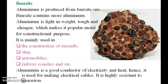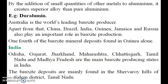Bauxite: aluminium is produced from bauxite ore. Bauxite contains a high amount of aluminium, which is light in weight, tough and cheaper. It is used for constructing aircraft, ships, automobiles and railway coaches. Duralumin is an example of an aluminium alloy. Australia is the world's leading bauxite producer. Apart from that, China, Brazil, India, Guinea, Jamaica and Russia also produce bauxite. In India, Odisha, Gujarat, Jharkhand, Maharashtra, Chhattisgarh, Tamil Nadu and Madhya Pradesh are producing bauxite.